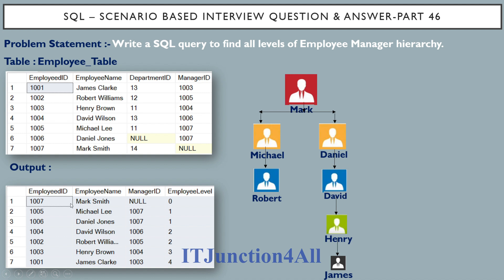In the pictorial diagram you can see Mark is not reporting to anyone. Rows two and three have manager ID 1007, meaning Michael and Daniel are reporting to Mark, so their employee level is one. Whoever reports to Michael and Daniel will be level two — Robert and David respectively. For level three, Henry Brown is reporting to David, and James is reporting to Henry, so his employee level is four.